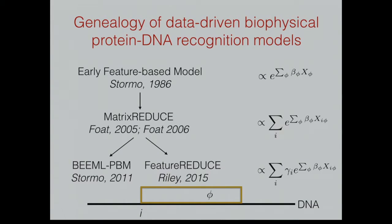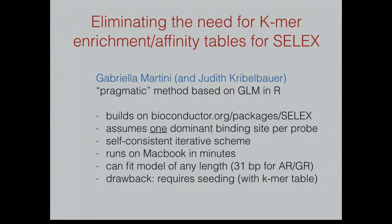If you have a sum, you can take the log to go from a sum to a product, but if you have a sum of a product — which this really is, e to the power of the sum of free energy contributions — then it's a harder computational problem. The first approach we developed, by Gabriela Martina in my lab in collaboration with Judith Kribbelbauer who is applying these methods while still being developed, assumes there's one dominant binding site per probe. The alignment is based on the affinity model, not on some sequence feature. We're working on a package making this available to others, building on the Bioconductor package for constructing K-mer tables efficiently that we already published.